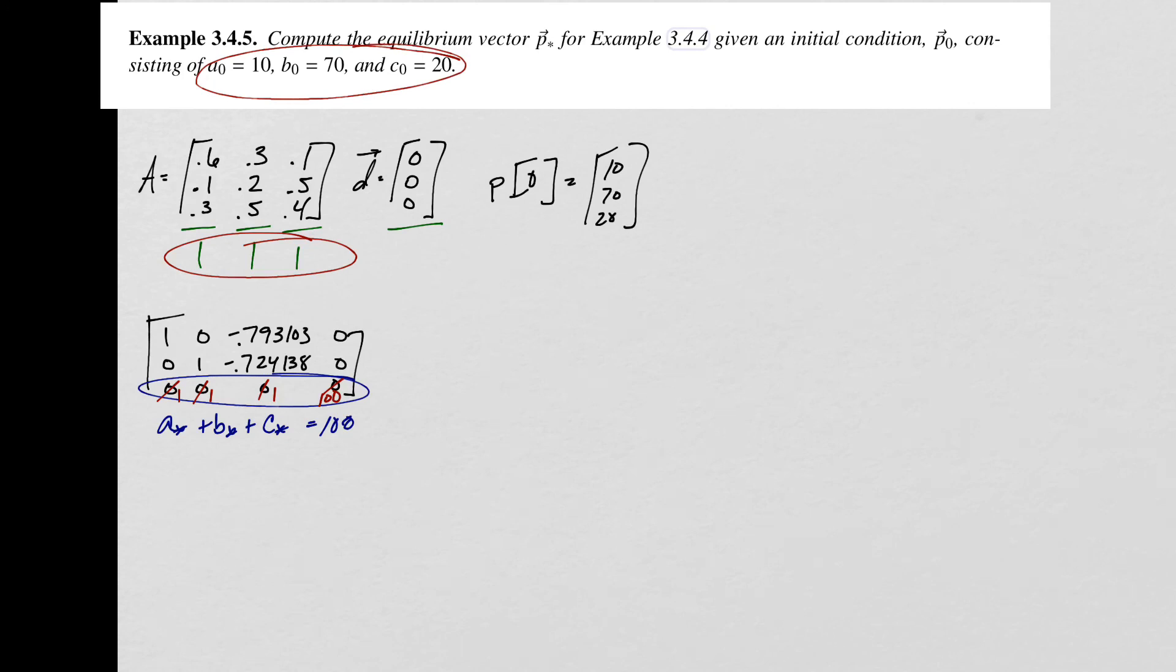If I'm in Mathematica, maybe I want to label this as my equilibrium vector. I'm just going to say that it equals this augmented matrix. Now I'm going to type in, we'll just do some row reduction here. We'll say row reduce this matrix EV.